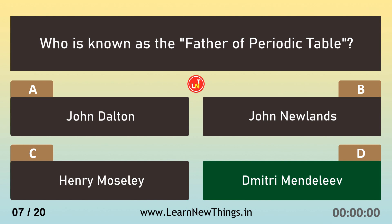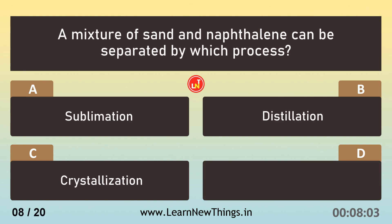A mixture of sand and naphthalene can be separated by which process? Sublimation.